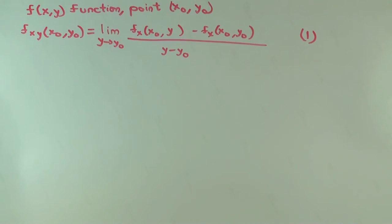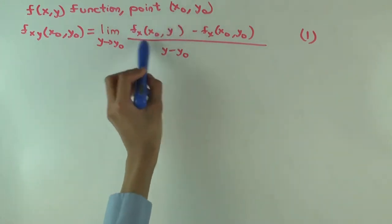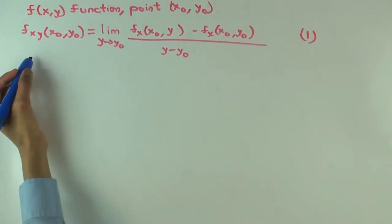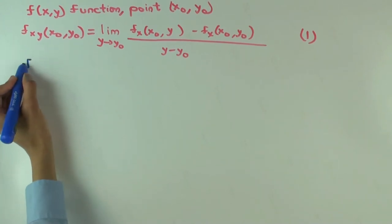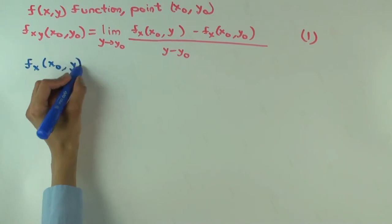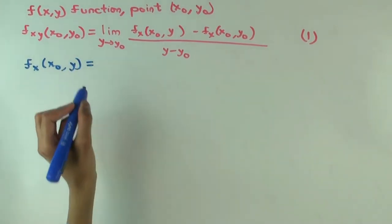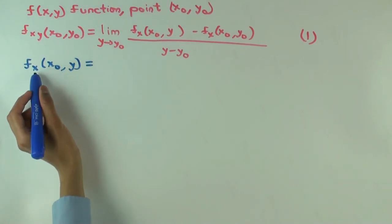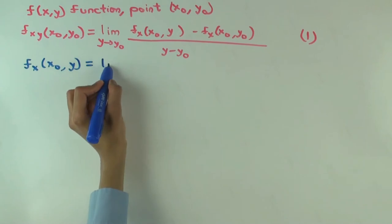Now, I want to go over what these two things are, because each of these itself is a limit. What is f sub x of (x0, y)? Well, this is the partial derivative with respect to x of a function. So we should take limit as x approaches x0.